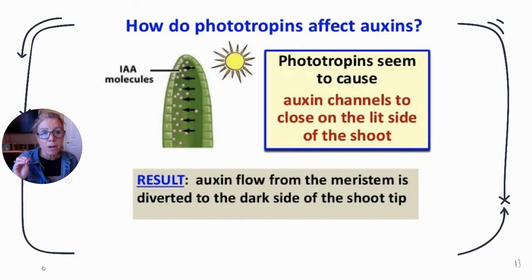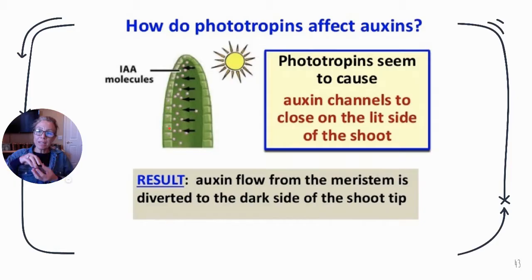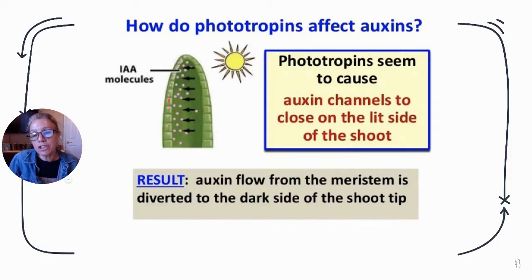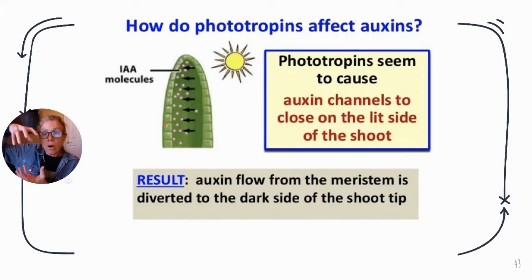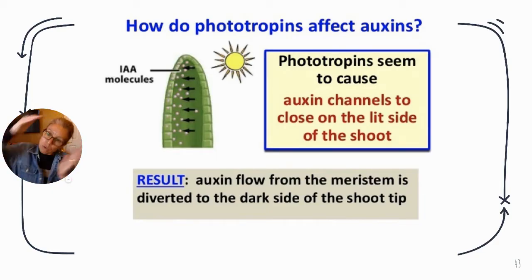This causes auxin to move to the shady side of the plant. Through the acid growth hypothesis, those cells on the shady side have a weakened cell wall, and when water moves into the vacuoles, it causes those cell walls to stretch, bending the plant towards the sun.